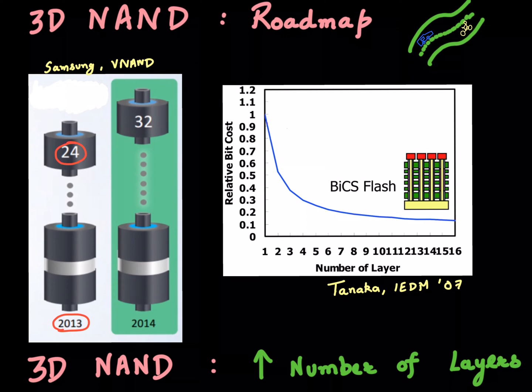Each of these cells was storing 2 bits per cell. In the next generation of this technology, introduced just a year later, instead of 24 they had 32 of these layers stacked on top of each other. Also, each of these cells was now storing 3 bits per cell.